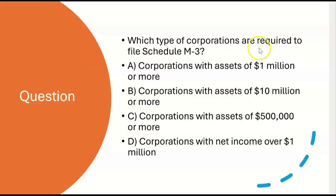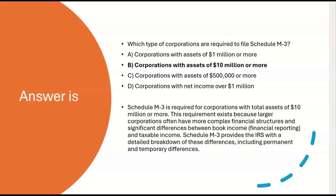Which type of corporations are required to file Schedule M-3? A: corporations with assets of $1 million or more. B: corporations with assets of $10 million or more. C: corporations with assets of $500,000 or more. D: corporations with net income over $1 million. The answer is B. Schedule M-3 is required for corporations with total assets of $10 million or more, because larger corps often have more complex financial structures and significant differences between book income and taxable income, including permanent and temporary differences.